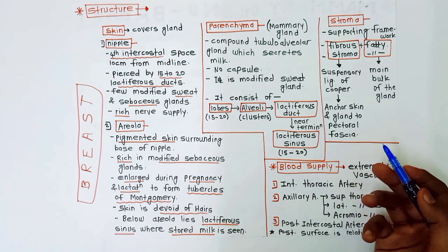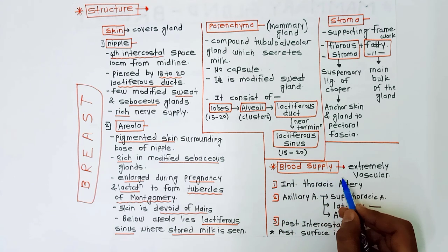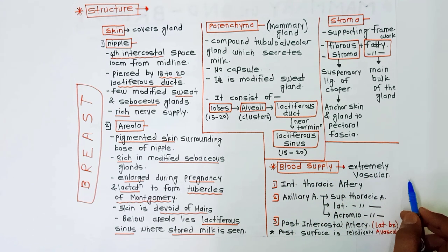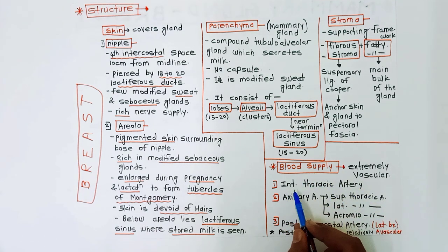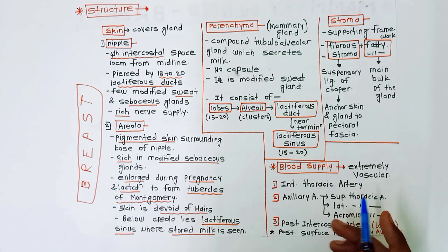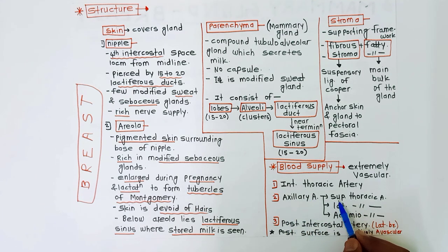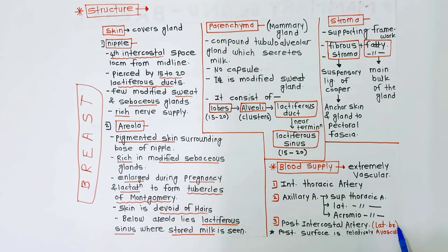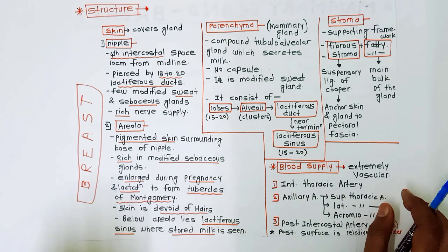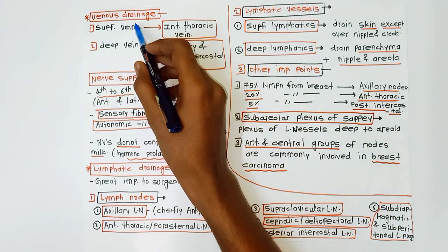After this we have the blood supply of the breast — it is an extremely vascular structure. Arterial supply is from three arteries: the internal thoracic artery, axillary artery, and posterior intercostal artery. The axillary artery has three branches: superior thoracic artery, lateral thoracic artery, and acromiothoracic artery. The lateral branches of the posterior intercostal artery supply the breast. The posterior surface is relatively avascular.